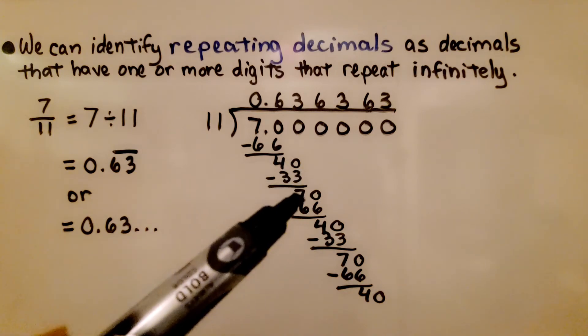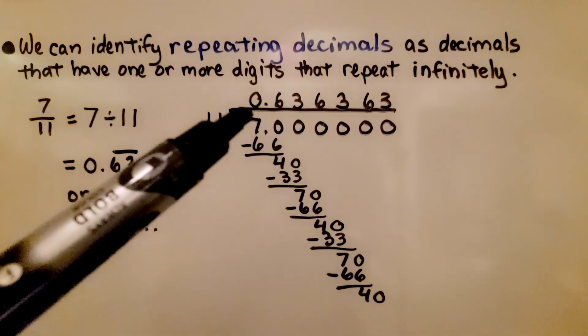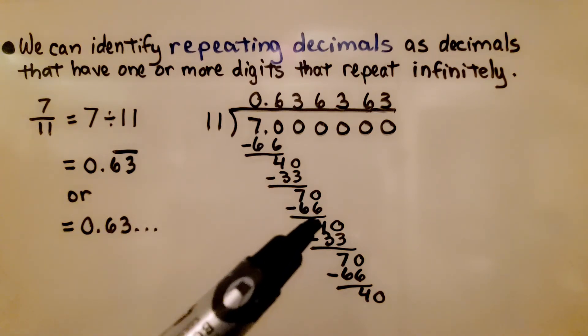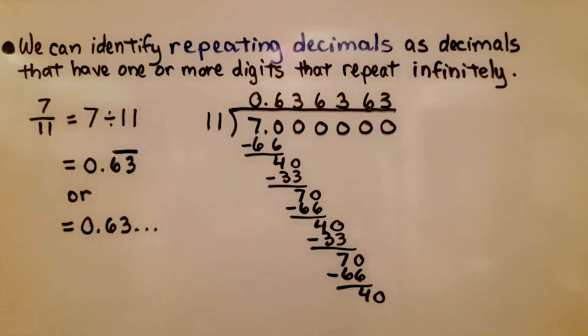That would be 11 times 3 for 33. We subtract and get a 7, and when we drop the next 0 down, we get a 70 again. Then we come down here and get a 40 again. Then we get a 70, then we get a 40.